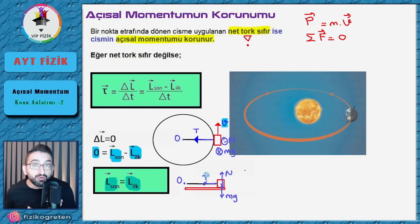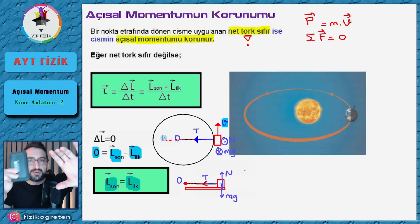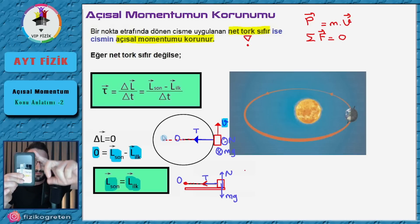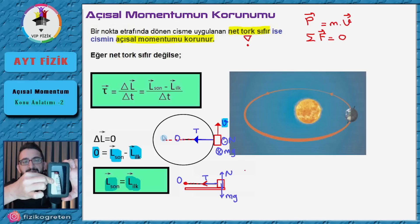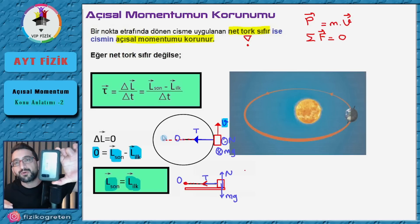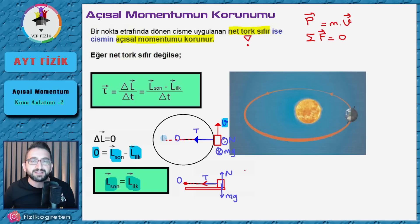Şimdi cisme etkeden kuvvetlerin torkunu inceleyelim. İp gerilmesinin uzantısı dönme noktasından (O noktasından) geçiyor. Bir kuvvetin uzantısı ya da kendisi dönme noktasından geçerse torku olmaz — bunu 11. sınıfta tork konusundan biliyoruz. Örneğin bir kapı düşünelim: kapıyı dönme eksenine doğru çektiğimizde kapı dönmez, çünkü kuvvetin uzantısı dönme ekseninden geçer. Burada ipin uzantısı O'dan geçtiği için bu ipin herhangi bir torku yoktur.